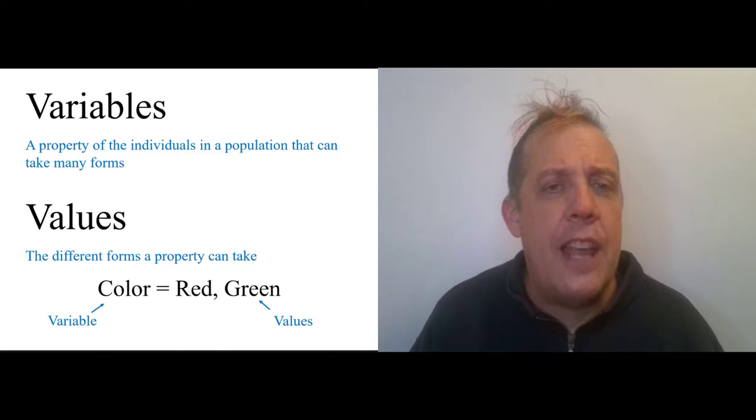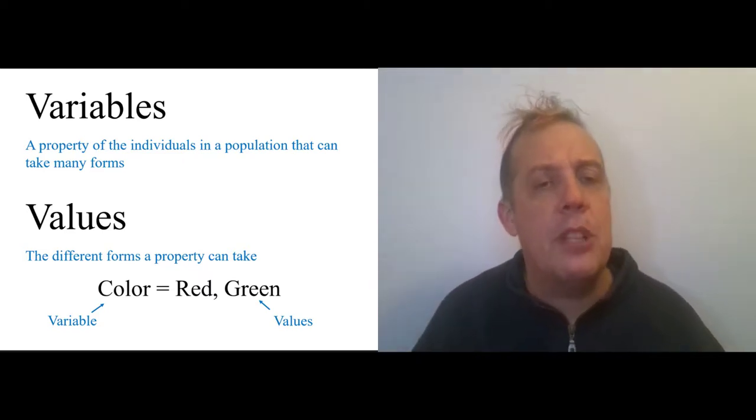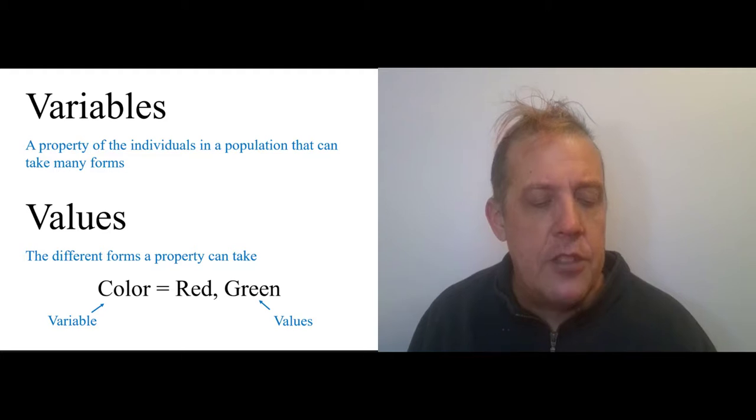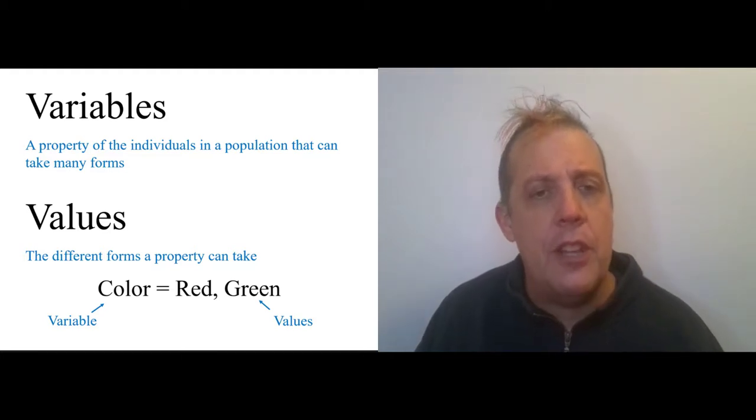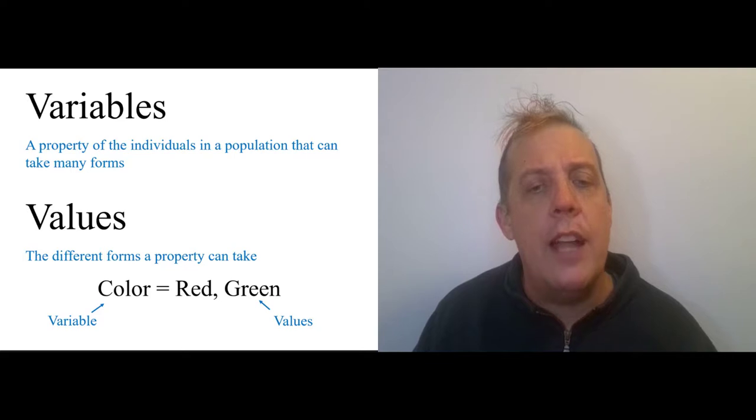F will be a variable, that is, it can take other values. A variable is a property of individuals in a population, and the values are the different forms that property can take. When you do elementary probability theory, they love to talk about urns full of balls that are different colors. You can think of color as the variable, and the values for the variable are red and green.